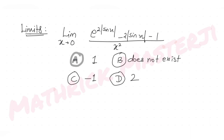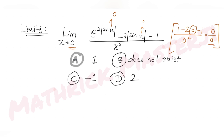Let's find the value of this limit. If I substitute x = 0 directly: sin(0) = 0, so 2|sin 0| = 0, and e raised to 0 = 1. The numerator becomes 1 minus 1 = 0, and the denominator is 0 squared = 0. We get the 0/0 indeterminate form.